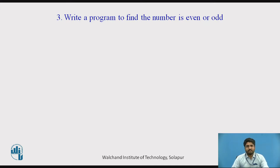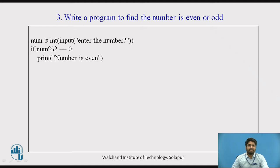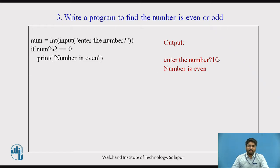Write a program to find whether a number is even or odd. I am taking a variable num as integer input — 'enter a number'. The condition is num modulus 2; the modulus operator gives the remainder. If we divide by 2 and the remainder equals 0, the condition is true and it prints 'the number is even'. If the user enters 10, then 10 mod 2 gives remainder 0, so it prints 'number is even'.